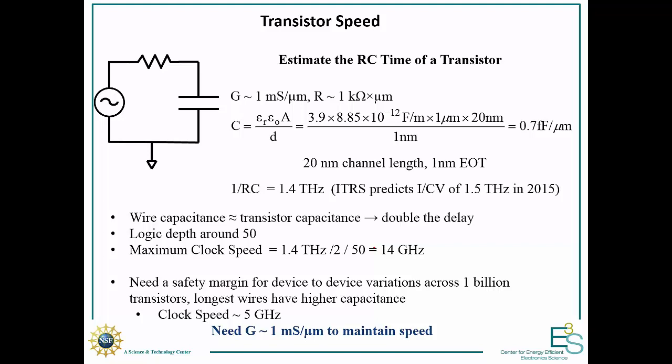And now let's address the last requirement, the transistor speed. And so first what we can do is figure out what is the RC time of a transistor and then look at how does that correlate to the clock speed in a transistor. And so if we say that typical transistors have a conductance of around 1 millisiemen per micron, which means a resistance of around 1 kilo-ohm micron, and you can just multiply this resistance by the capacitance. In a transistor, your capacitance is going to be dominated by the gate capacitance.